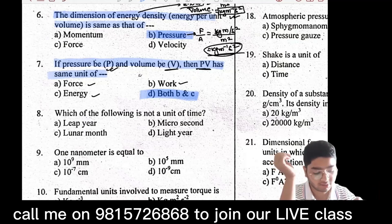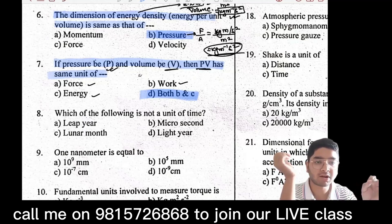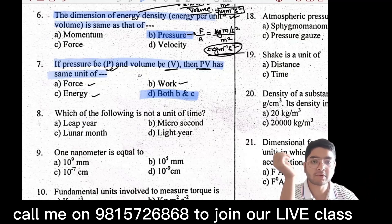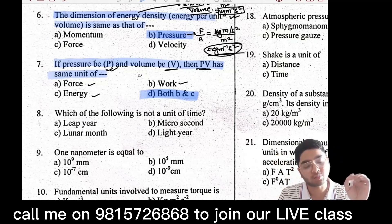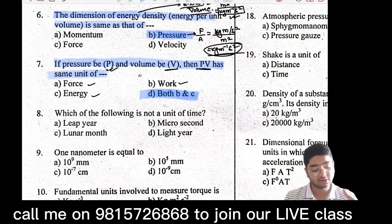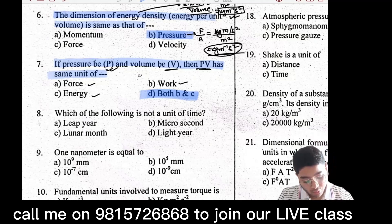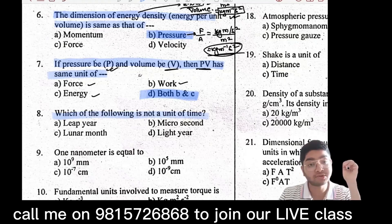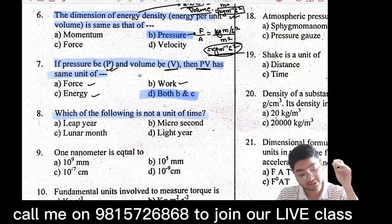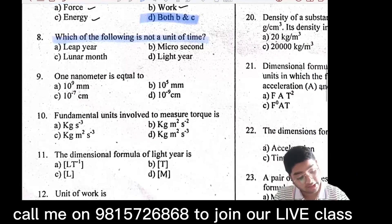We go to the dimension: work is F into d — kg·m·s⁻² into d in meters, giving kg·m²·s⁻². This is the energy. Now, which of the following is not the unit of time? Here we have light year.